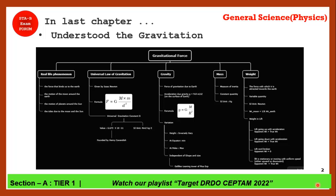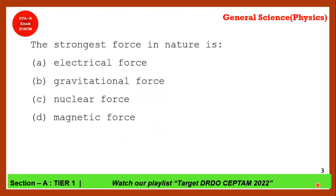The very first question is: what is the strongest force in nature? Gravitation force is not the strongest force — it is actually the weakest force. The strongest force is nuclear force, because atoms are tightly bound in material. So nuclear force is the strongest force in nature, and gravitational force is the weakest.